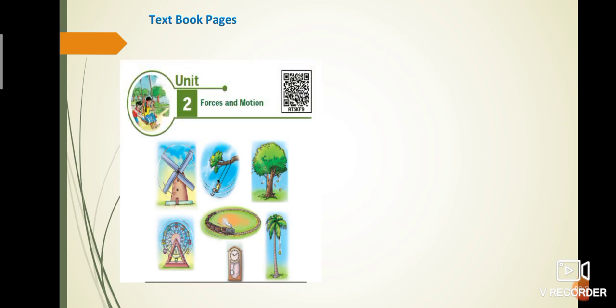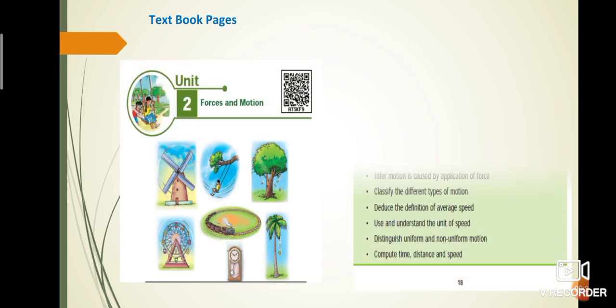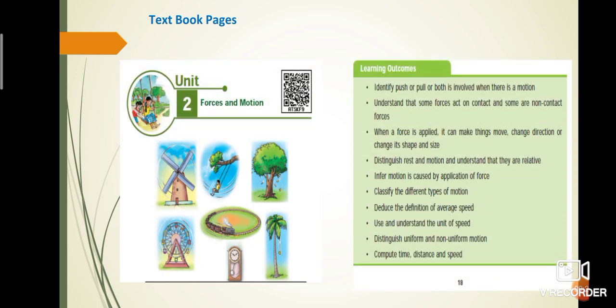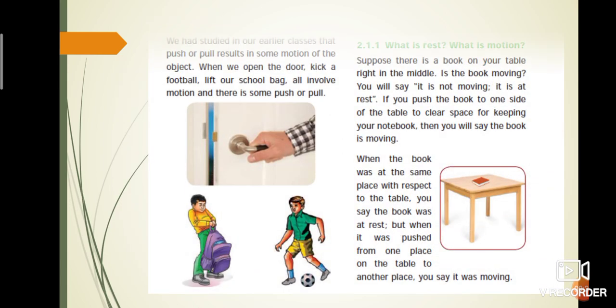Ok students, now is the time to recollect our portion. Let us see some textbook pages. This is page number 18, lesson 2 starts. Learning objectives given in that page itself. We discussed earlier. Introduction given in page number 19, motion and rest explained in that page. Motion is change of position of an object with respect to time. No change in position is called rest.